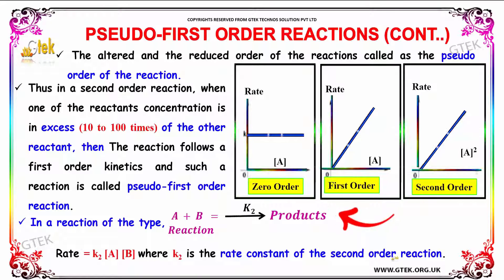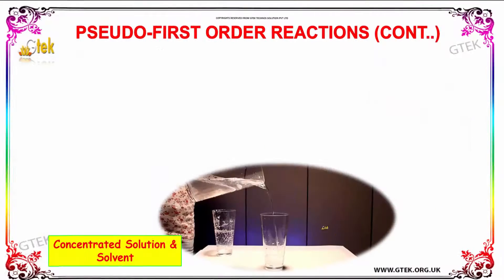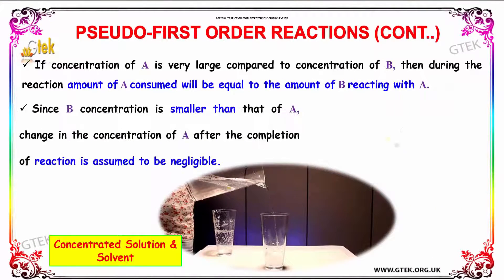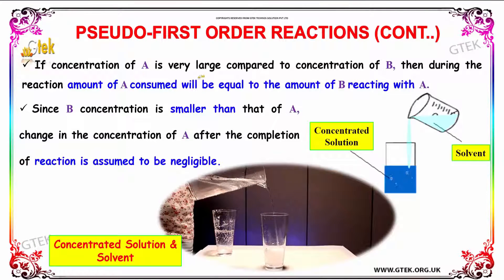If concentration of A is very large compared to the concentration of B, then during the reaction amount of A consumed will be equal to the amount of B reacting with A.